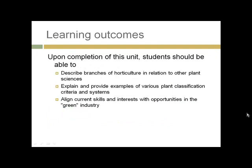Outcomes for this unit are for you to be able to describe the branches of horticulture in relation to other plant sciences, explain and provide examples of plant classification systems beyond just the botanical one, and choose one of those systems and describe it in your discussion. Your assignment will be to take steps to align your current skills and interests with opportunities in the green industry or horticulture.